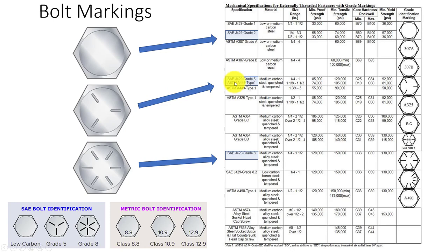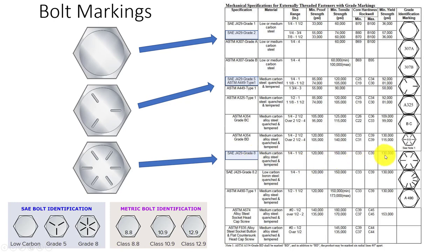Three markings means grade five. Look at the strength difference - 92 to 81 KSI yield versus 36 KSI, almost double the yield strength, with hardness really kicked up. That would be about a 4 or 5 on the C scale. Six markings is grade eight - look at that: 130 KSI on the yield, a little bit harder. We're seeing a huge difference between grade two and grade five, and a smaller but significant jump from grade five to grade eight. Grade eight is your strong fastener, grade two is your weak fastener.